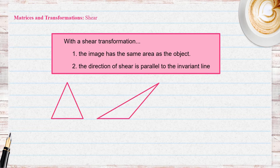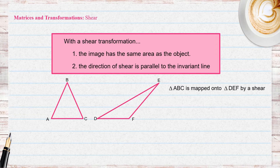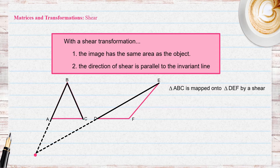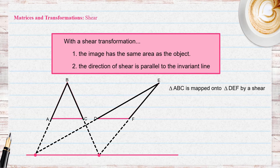So if you consider these two triangles — triangle ABC and triangle DEF — we can say triangle ABC undergoes a shear transformation being mapped onto triangle DEF. To find the invariant line, we simply have to extend corresponding sides, like AB corresponds to DE. So extending AB and DE gives us a point where the two extended lines meet. Also, BC and EF are corresponding sides, so BC and EF extended give us a point of intersection. Joining these two points gives us the invariant line.